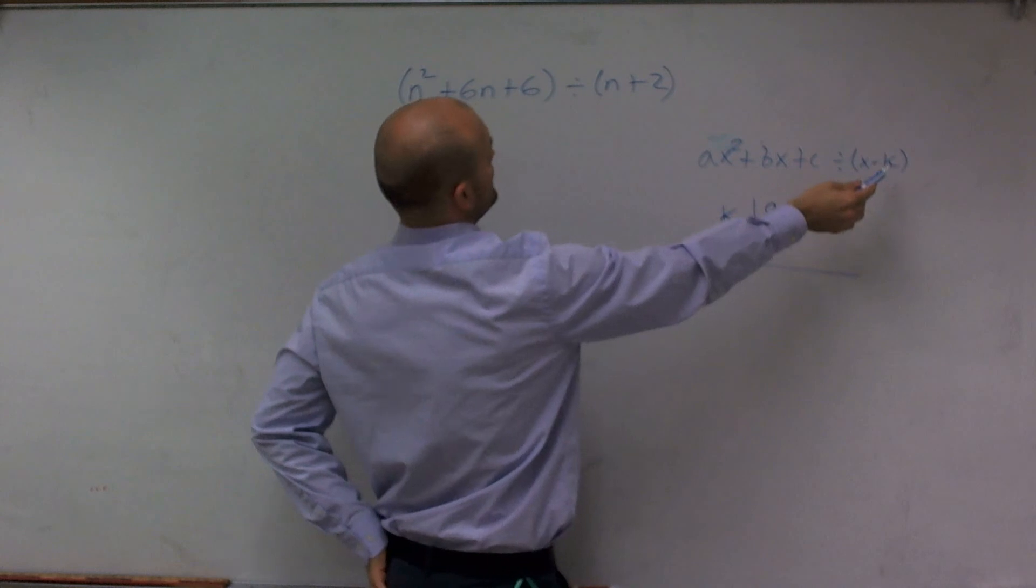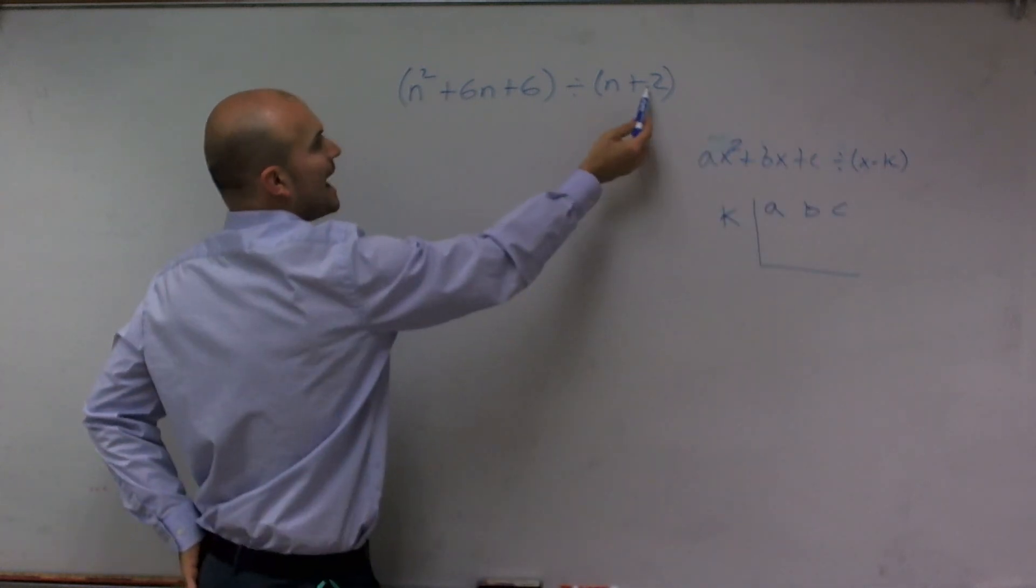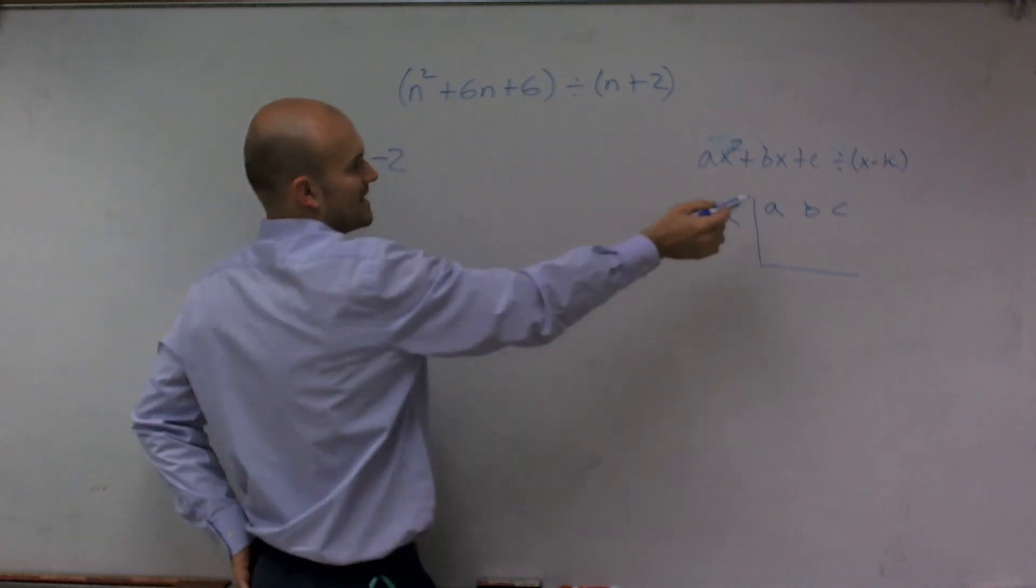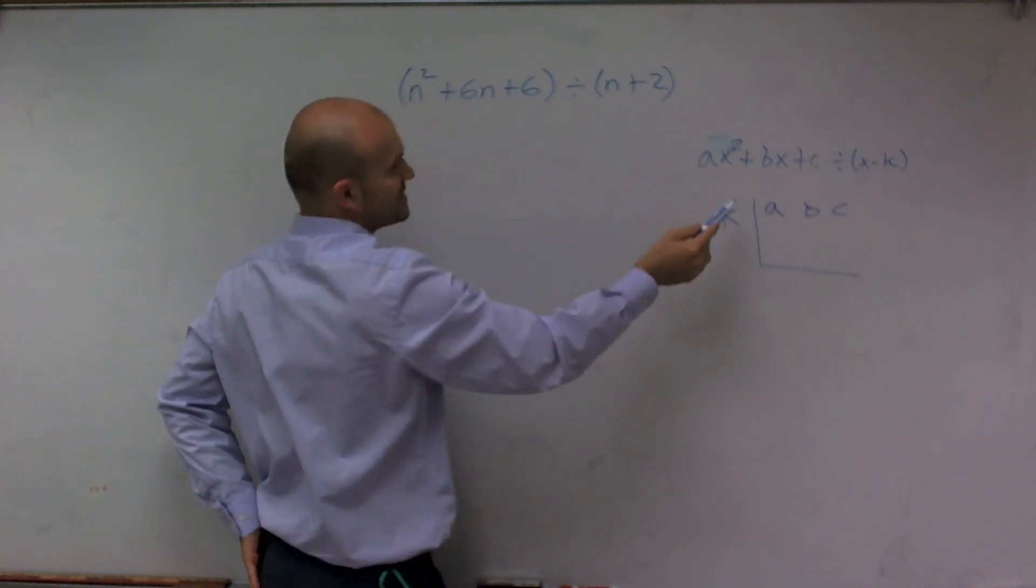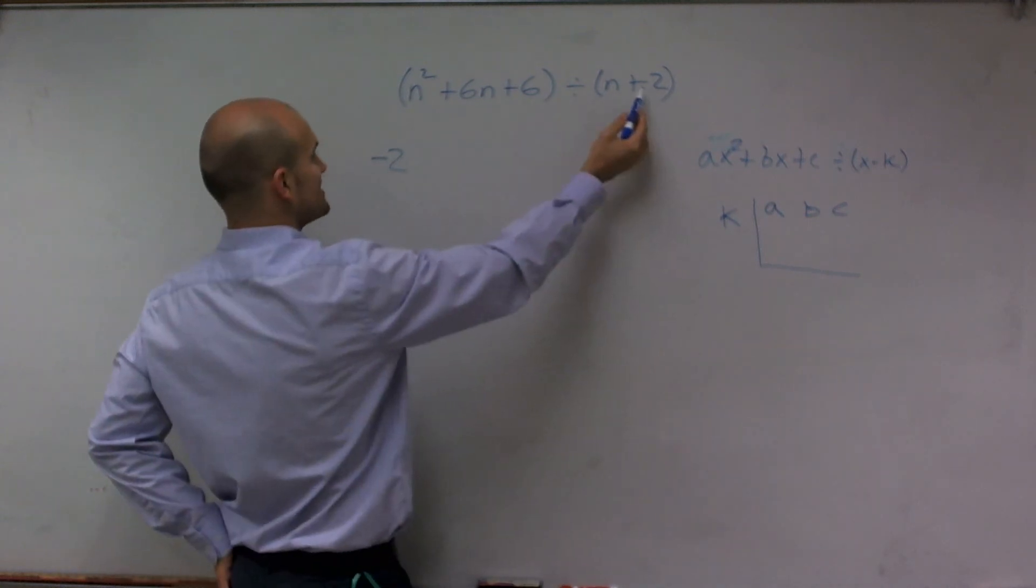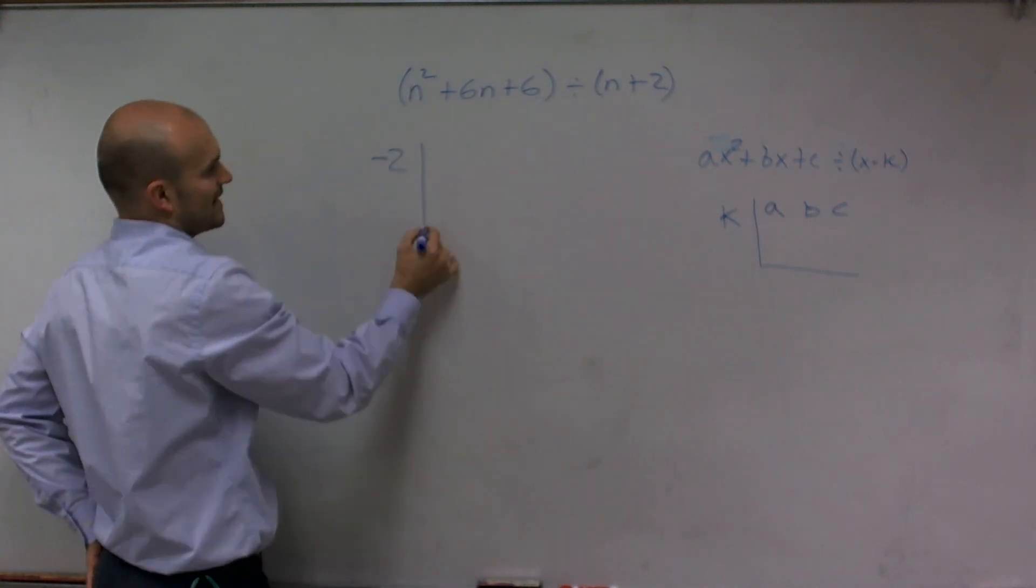what we're going to do is we need to determine what our k is. Well, remember our form is x minus k. So we need to use the opposite of this 2. So I'm going to have a negative 2, since we're taking the opposite. You're going to be taking the opposite sign of what you have in your binomial. So since that's 2, my k is going to be negative 2.